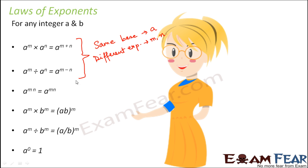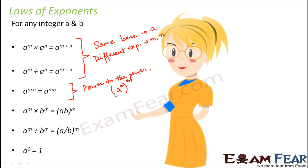When you look at the third scenario, it deals with power to the power. That means you have a to the power m, and to this power you are adding another power. So a to the power m whole to the power n — that is power to the power. So that is what is dealt in the third case.